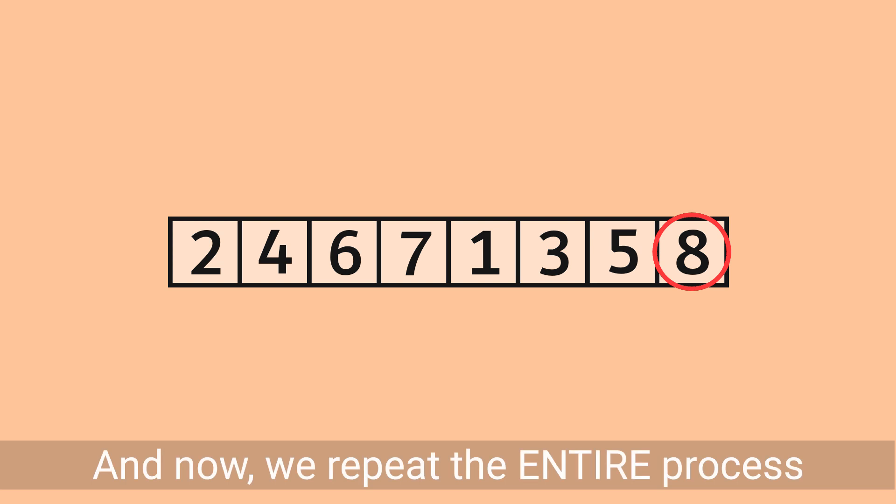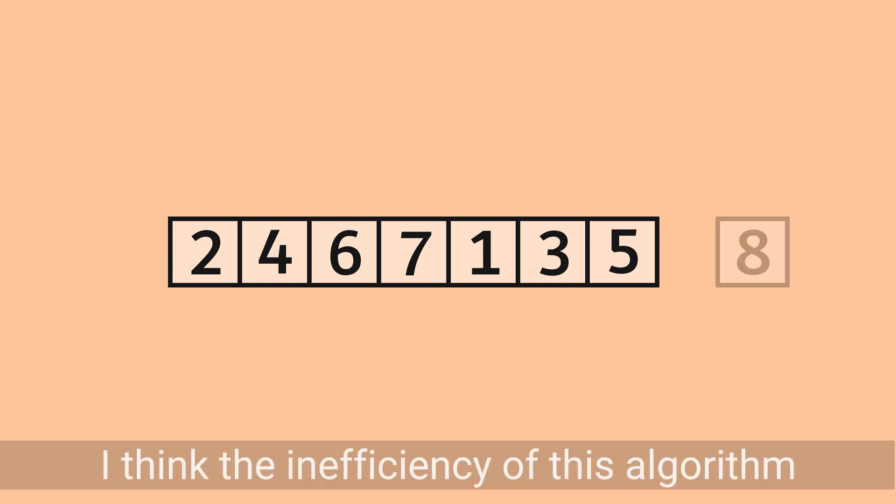we can find the largest number in the original list and place it at the end like so. And now, repeat the entire process without the last number. I think the inefficiency of this algorithm is quite clear.